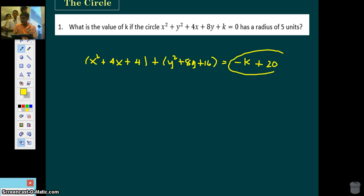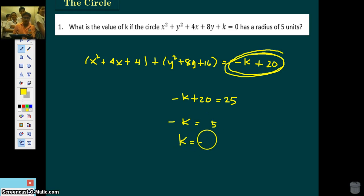Now, the right side is r squared. So you know that negative k plus 20 is equal to r squared. If the radius is 5, then the right side must be 25. So what is k? Negative k plus 20 is 25. Negative k equals positive 5. So k is negative 5. Done with number 1.